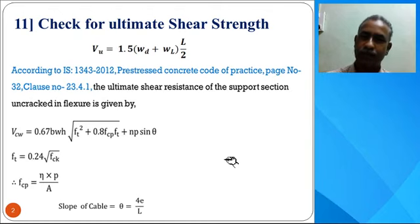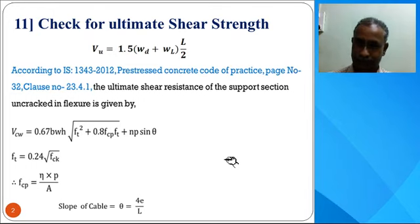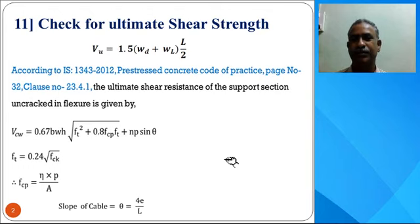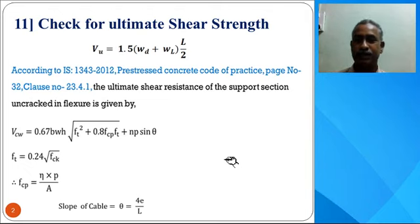Today in this lecture we discuss the further design steps. First is the check for ultimate shear strength of the prestressed concrete beam. In the case of a beam, shear force is maximum at the support and minimum or nil at midspan. The cable profile is parabolic, and because of the cable profile and eccentricity, the shear capacity of the prestressing section is improved.